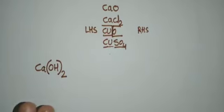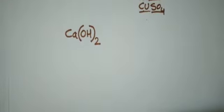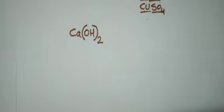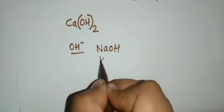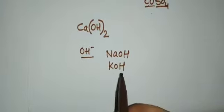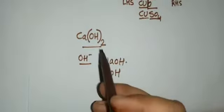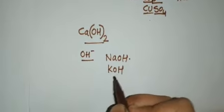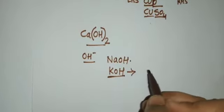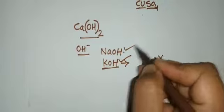In the case where the number of polyatomic ions is one, the bracket is not required. For example, OH minus — if the polyatomic ion is just one, as in NaOH or KOH, brackets are not needed. But if the polyatomic ion appears more than once, we must use brackets before writing the ratio. Writing it as KOH twice without brackets is incorrect.